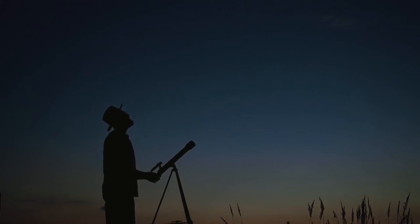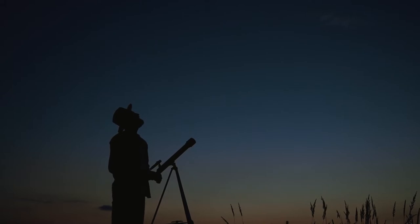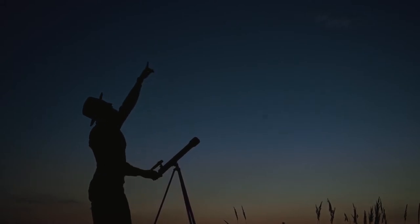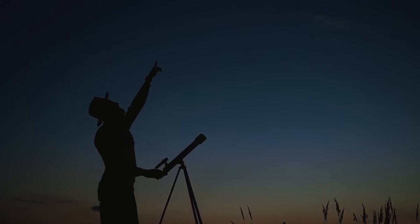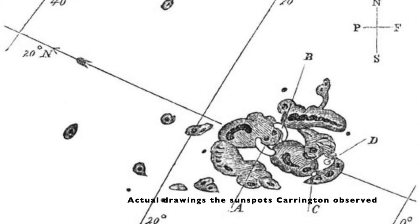It was September 1st, 1859. A man by the name of Richard Carrington went into his private observatory on his estate and looked through his telescope at the sky. What he saw was, and I quote, "two patches of intensely bright and white light." These had erupted from the darkened sunspots he had seen only moments earlier. Five minutes after the event had started, the light reduced back to its normal state. But this was just the beginning. This was the Carrington event.